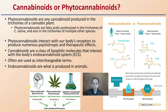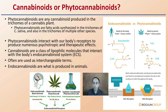We have endocannabinoids, which are brain-derived; phytocannabinoids; and we also can't forget about synthetic cannabinoids, which are pharmaceutical lab-created. They all interact with the endocannabinoid receptors of the body. To oversimplify, we have CB1 and CB2 receptors with different shapes, because shape determines function — that's how binding occurs. The shape of these molecules is key to their interaction with the body's neurological system.